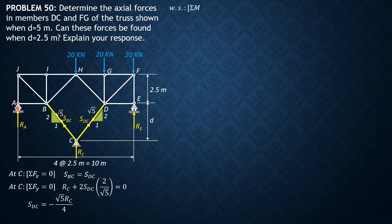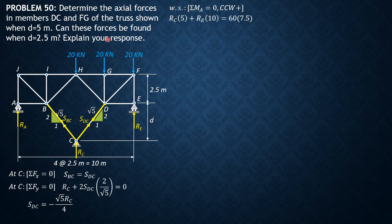Having expressed S_DC in terms of R_C, we consider the whole system and sum moments about A to express R_E in terms of R_C. Note that the loads are symmetrically applied — equivalent to 60 kN acting at g at 7.5 m. So R_C times 5 plus R_E times 10 equals 60 times 7.5. Simplifying gives R_E equals negative 0.5 R_C plus 45.